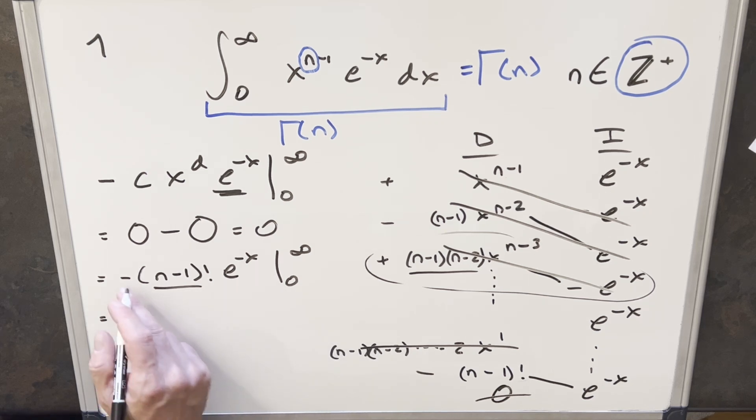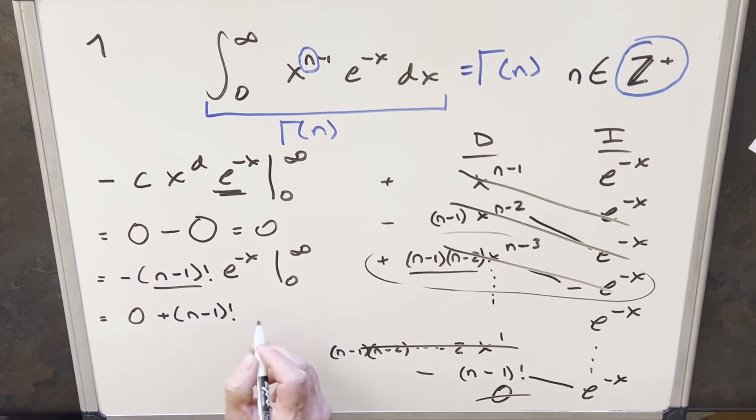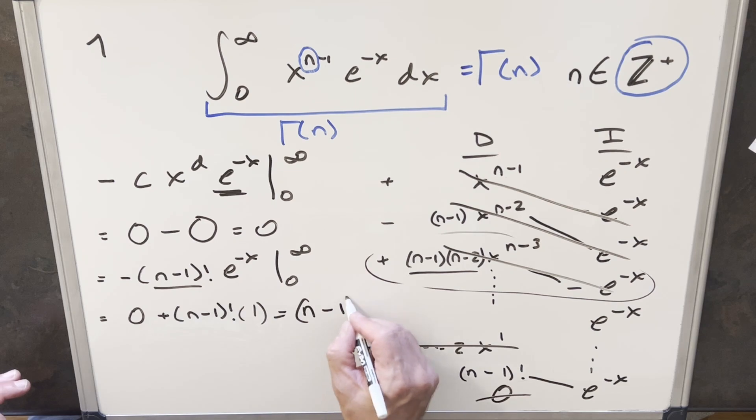Then for the second part, minus times minus is plus. We have this n minus 1 factorial. But now you plug in 0 here, e to the 0 is just 1. And so for my final solution of this, we just have n minus 1 factorial.